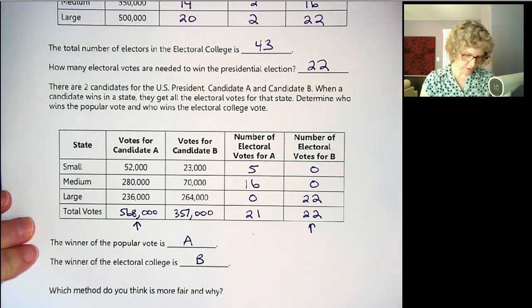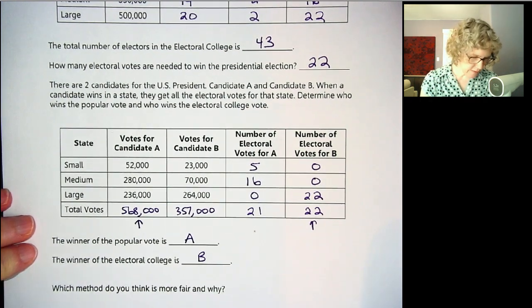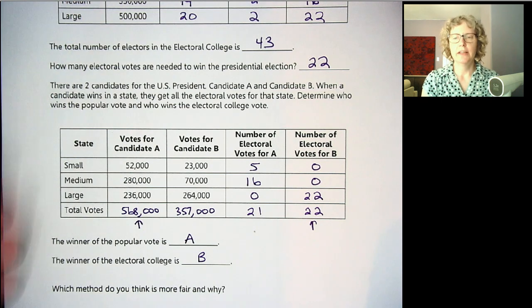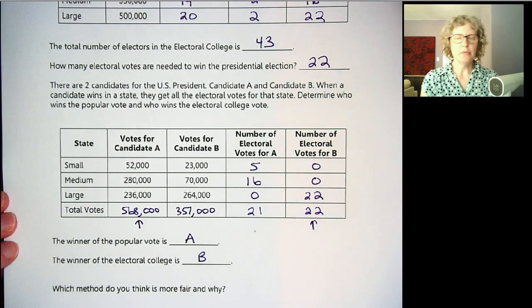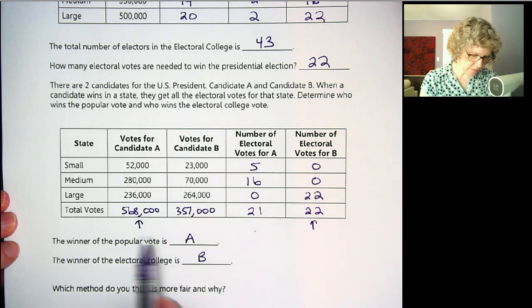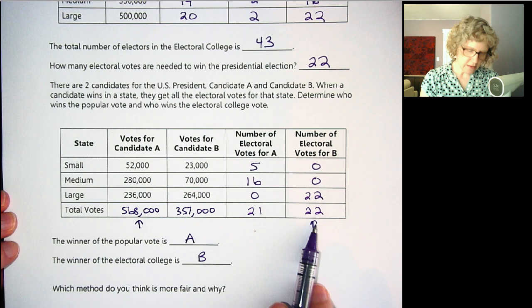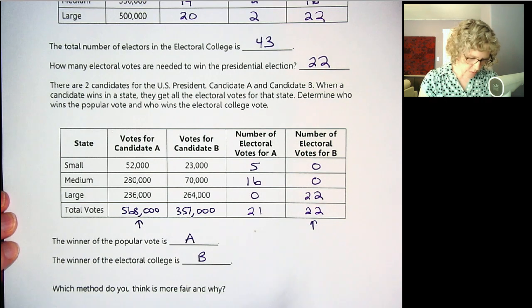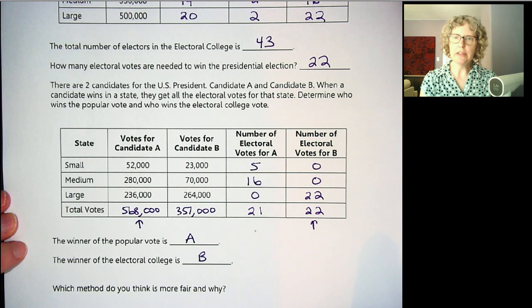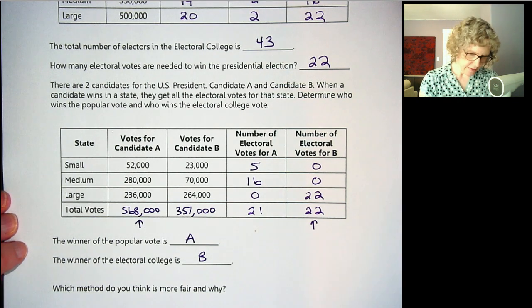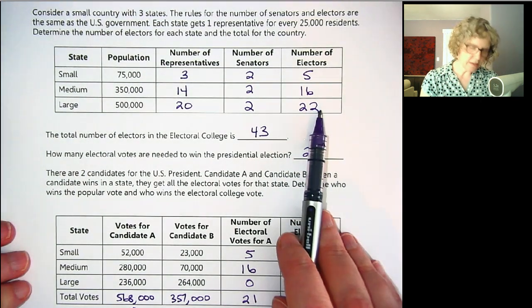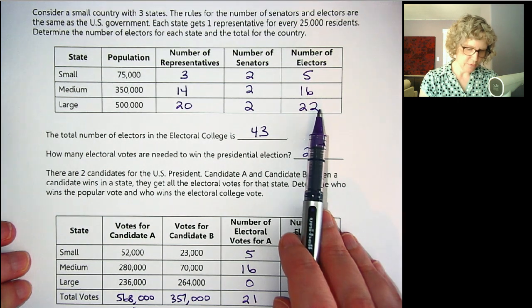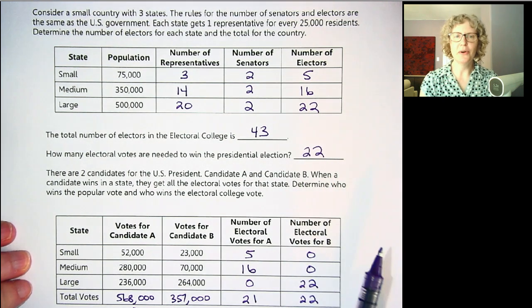I'll leave it to you to answer: which method do you think is more fair and why? This has happened in our country at least four times where the popular vote winner and the electoral college winner are not the same. If they are the same, that's a pretty overwhelming victory. However, in our country, the winner of the electoral college becomes the president — there's no right or wrong answer on that. Also think about elections and candidates visiting states: they need 22 electoral votes to win, and they can get 22 with only one state. Do you think they would bother going to the other two, or just campaign in that large state? It depends on the demographics and the voters in those states.